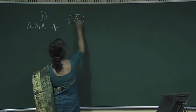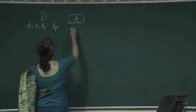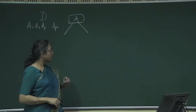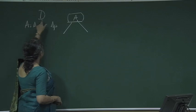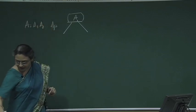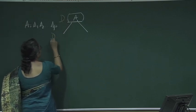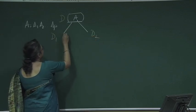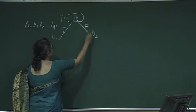Let A be the attribute that we have selected. Based on that attribute we look at the different values of the attribute. Suppose A takes two values; corresponding to that we will have two children of A, and the set of training examples D initially associated with the root will be split into D1 and D2. Suppose this branch corresponds to A equal to true, and this corresponds to A equal to false.